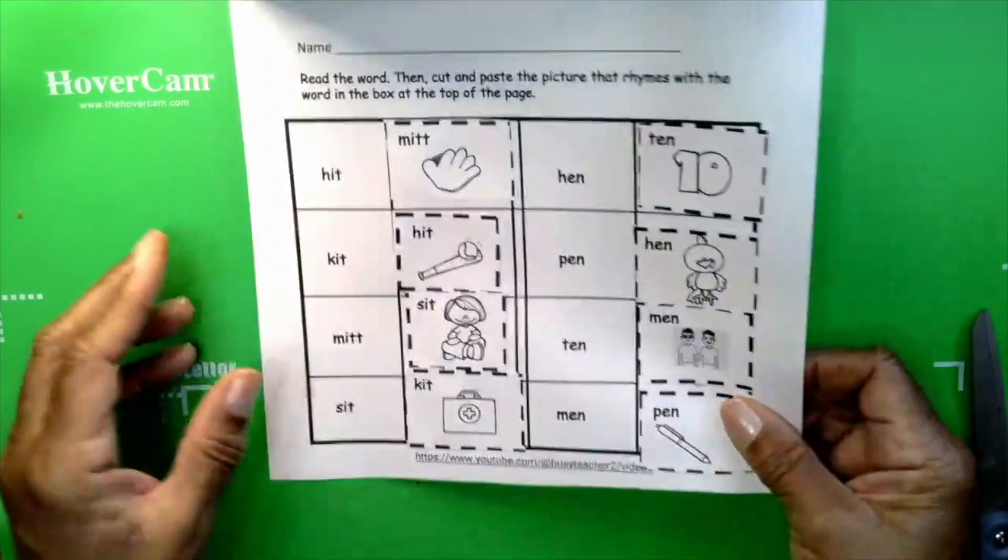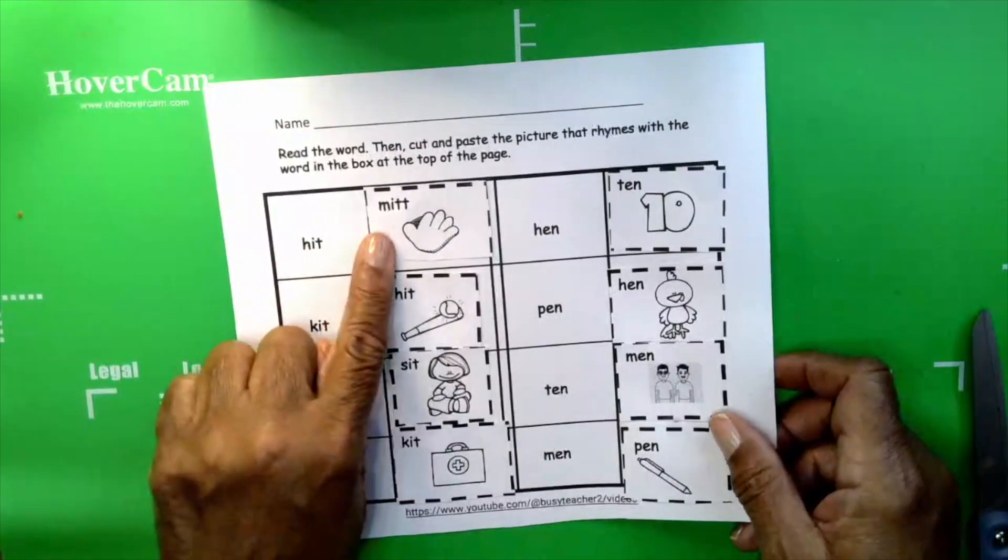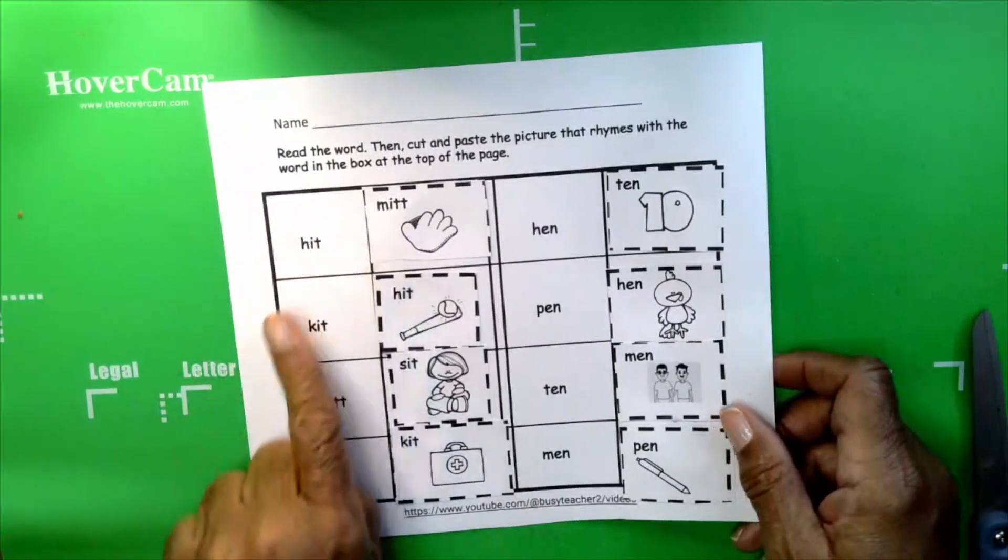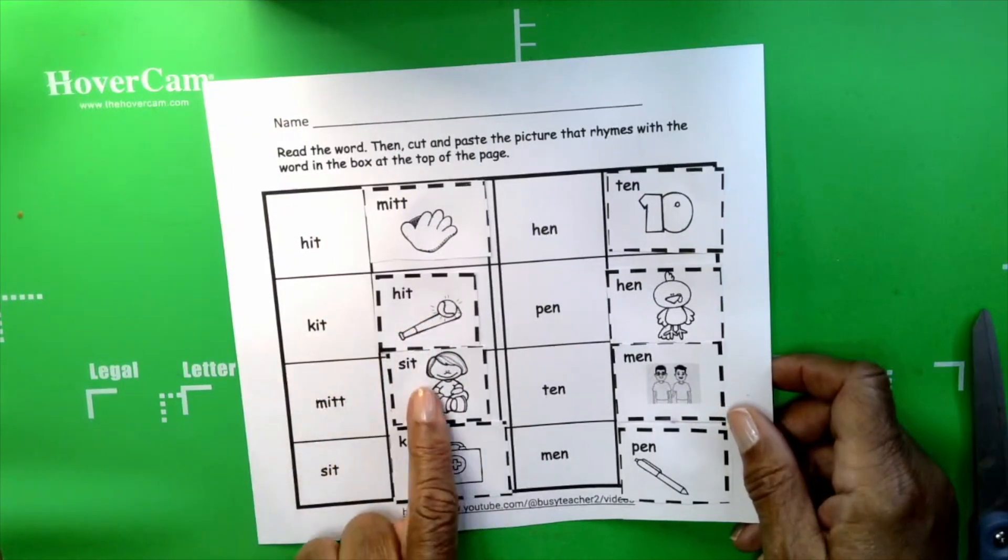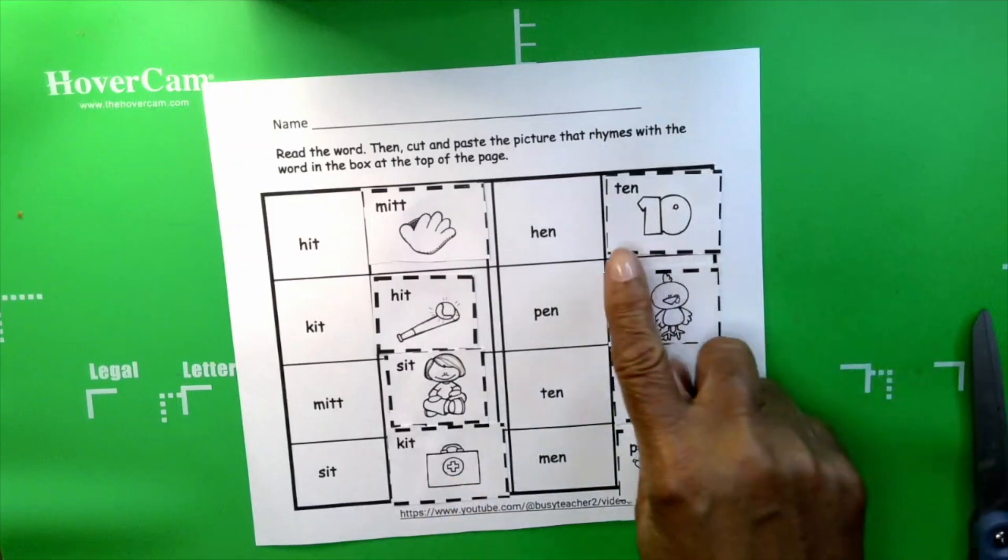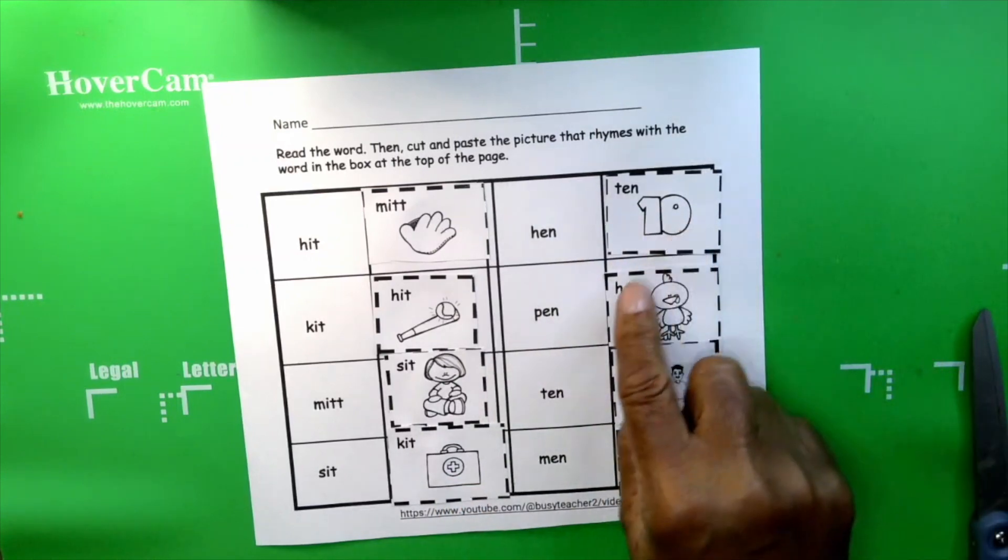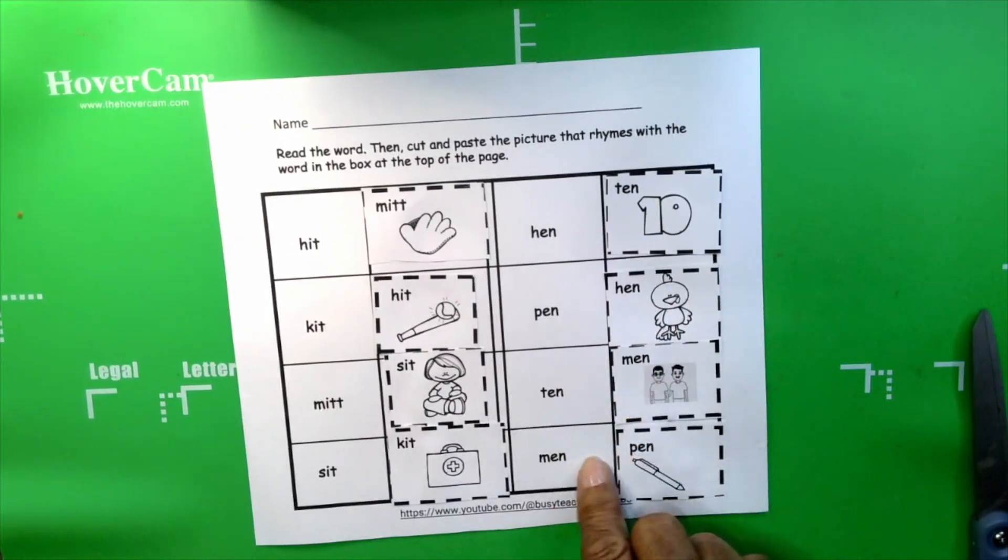We're done matching our rhyming words. Hit, mitt. Repeat after me. Hit, mitt. Kit, hit. Mitt, sit. Sit, kit. Hen, ten. Pen, hen. Ten, men. Men and pen. They all rhyme.